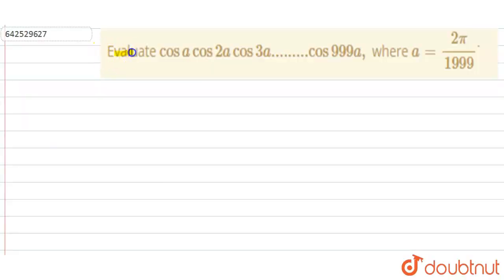In this question, we need to evaluate cos a cos 2a cos 3a up to cos 999a, all in multiplication. We need to find the value where a is given as 2π upon 1999. Let's solve it.